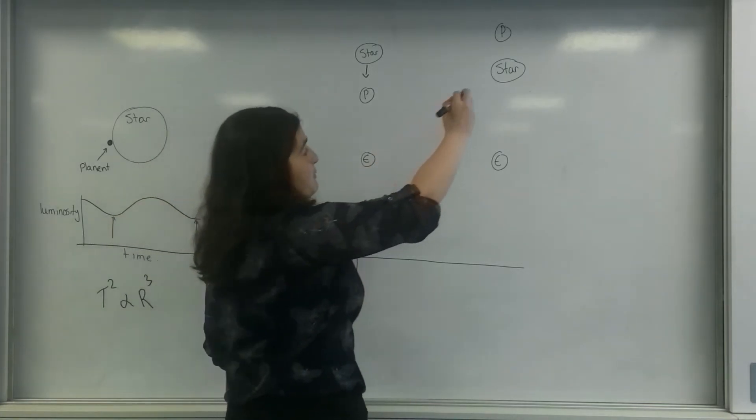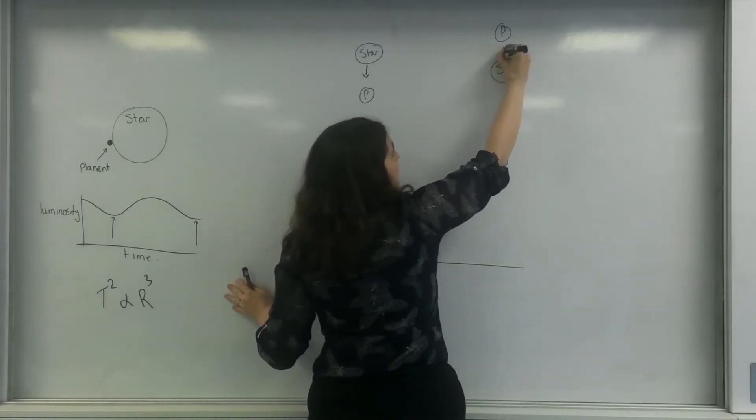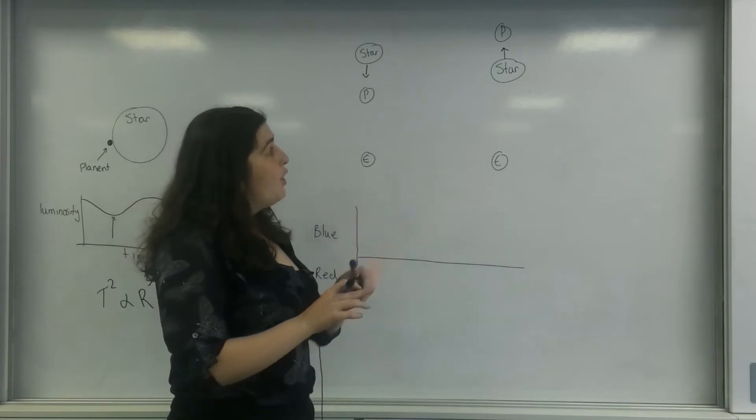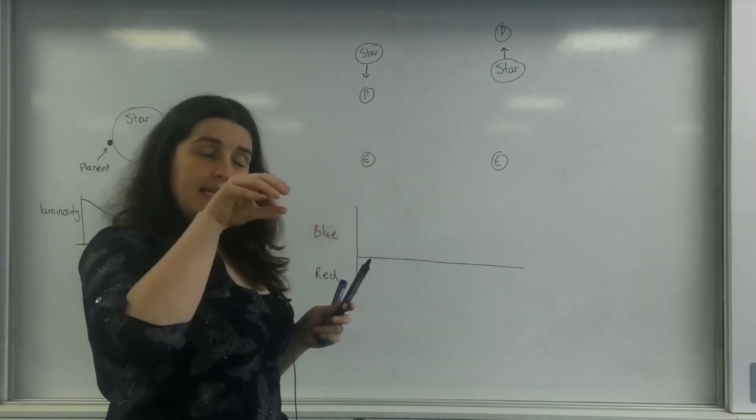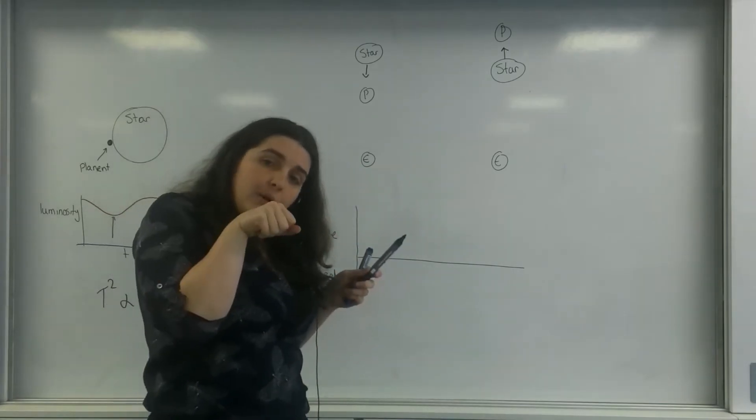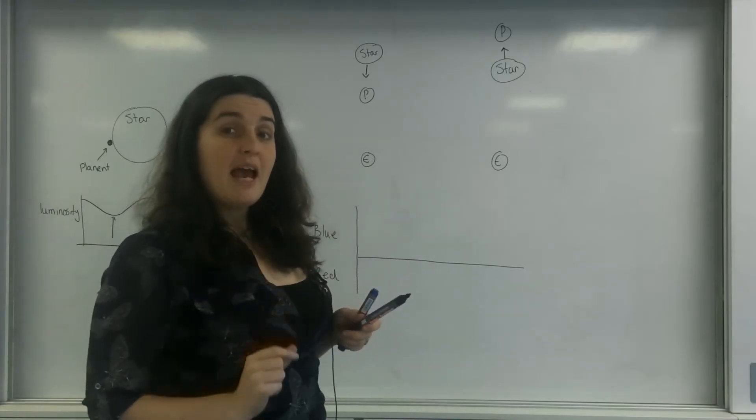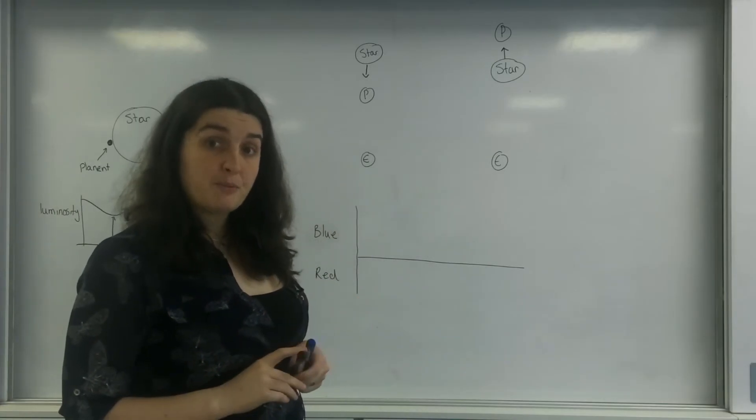Whereas when it comes backwards here, when the planet is behind the star from Earth, we actually notice that the planet will pull it backwards a little bit. So we would notice a slight bit of redshift from its normal actual spectra.